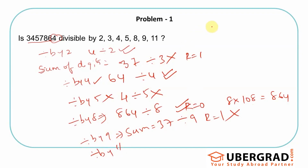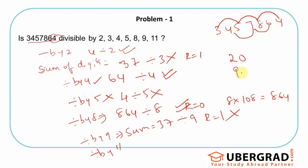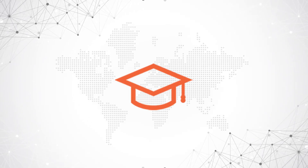For 11: apply the alternating digit rule. Taking alternate digits from the right: 3+5+8+4 = 20. Remaining alternate digits: 6+7+4 = 17. Wait, the difference is 20 minus 17 = 3. Is 3 divisible by 11? No, so the whole number is also not divisible by 11.